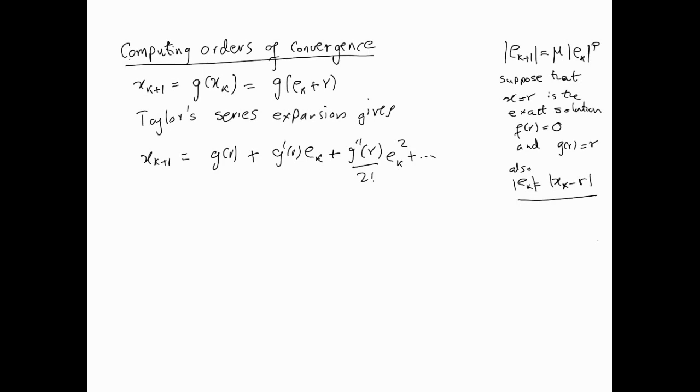And of course we can curtail it at e_k squared, if we wish, at some point r which happens to be between x_k and r. But anyway, this is the Taylor series expansion. What else can we get out of this?